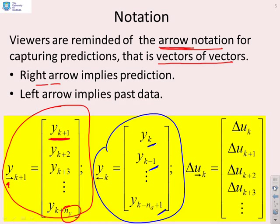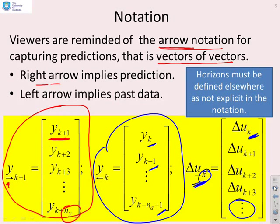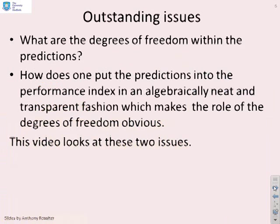And we've got a forward arrow notation over here for delta u future, and you'll notice because we have the subscript k, we start the forward vector at time k, and the dots here tell you I'm not saying how far forward we're going. So, a key point here, horizons are not explicit in this arrow notation. They basically have to be implicit or stated what those horizons are elsewhere.